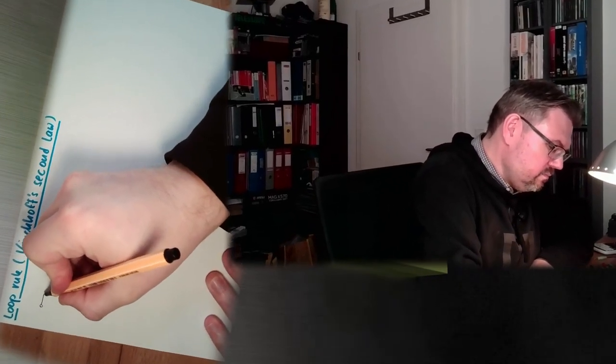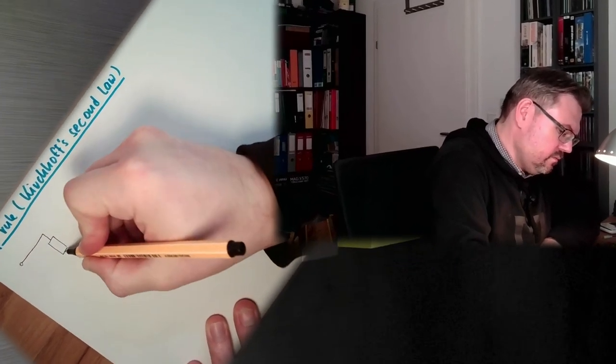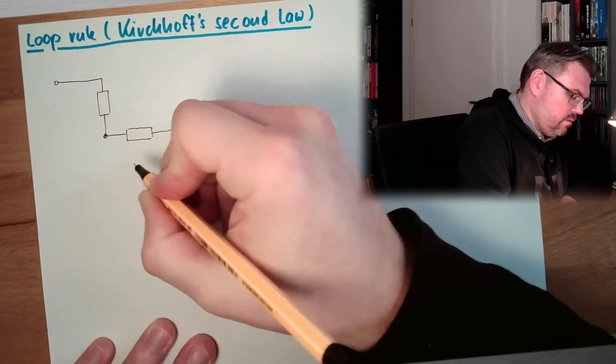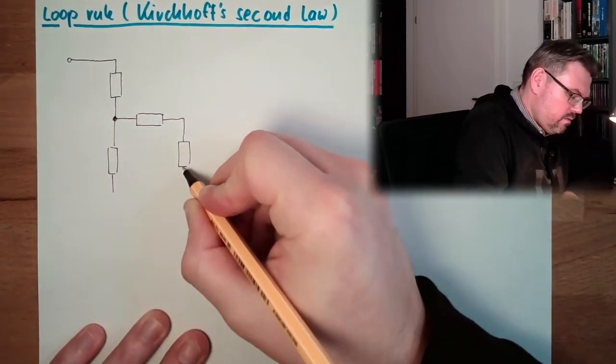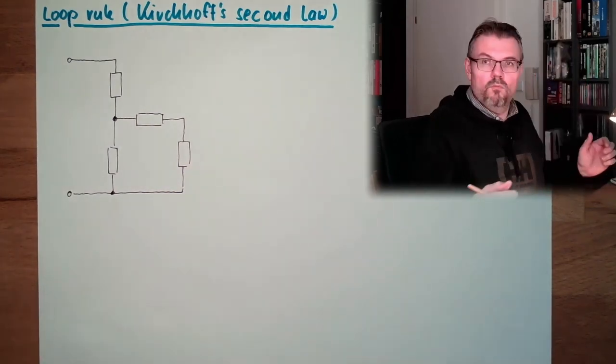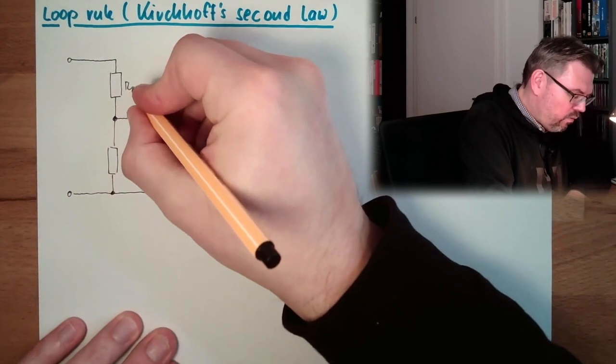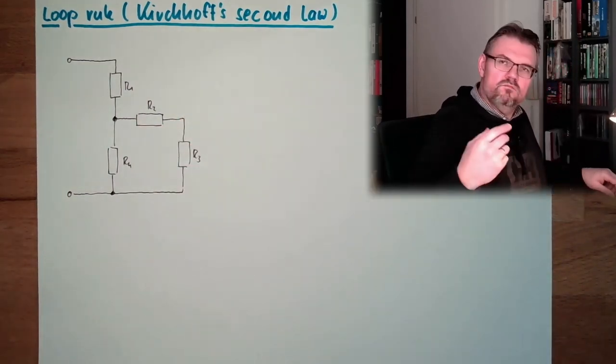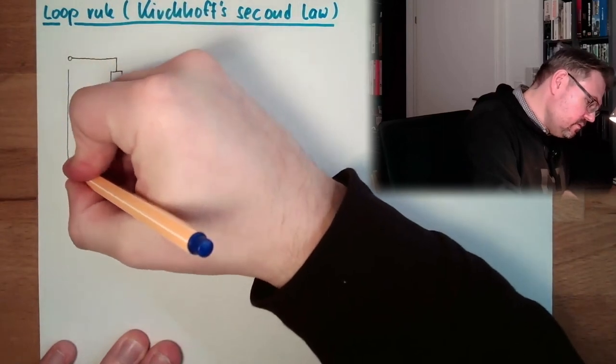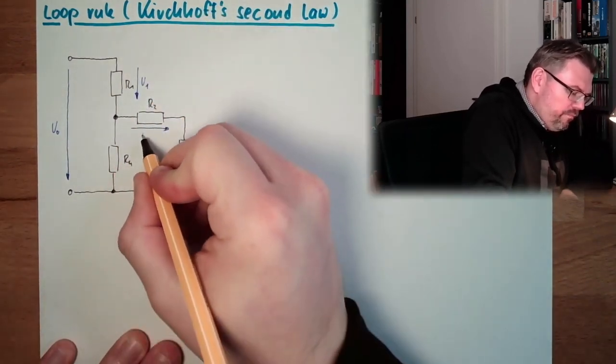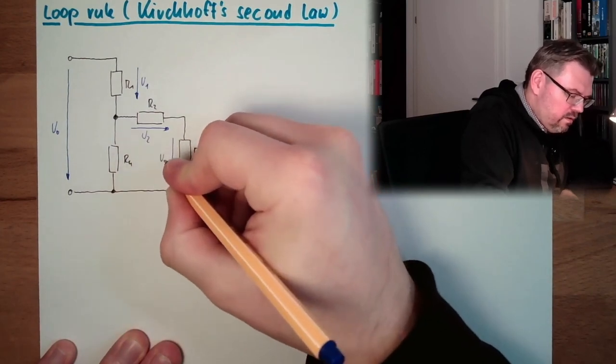So let's say we have a certain power circuit. Should look like that, maybe. So we have here some Rs, we have R1, we have an R2, we have an R3, we have an R4 and now we just draw some voltages inside. So here we have an U0, here we have an U1, here we have a U2, here we have a U3, here we have a U4.